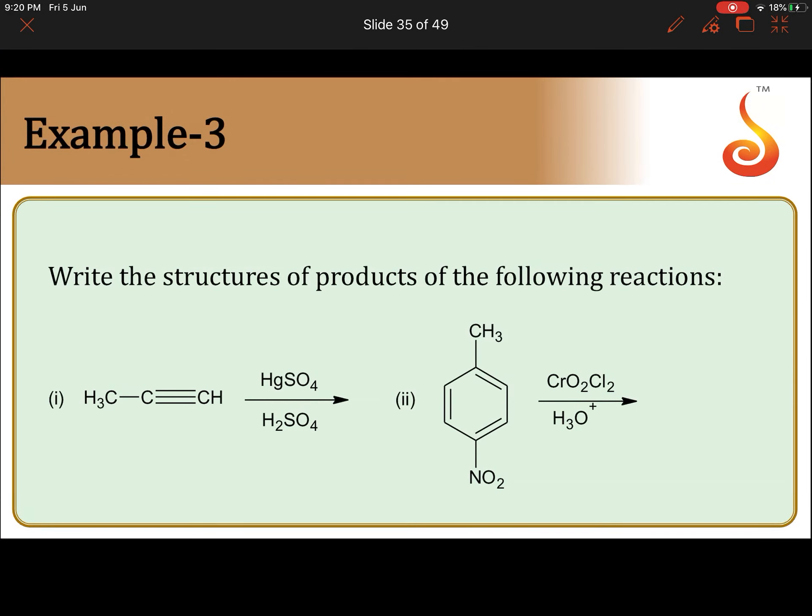Write the structures of products of the following reactions. Let's see the first reaction: CH3-C triple bond CH. What is there on the arrow? HgSO4 and H2SO4. If H2SO4 and HgSO4 are on the arrow, alkyne takes one molecule of water. Addition takes place according to Markovnikov's rule, so what will I get? CH3-C-OH.